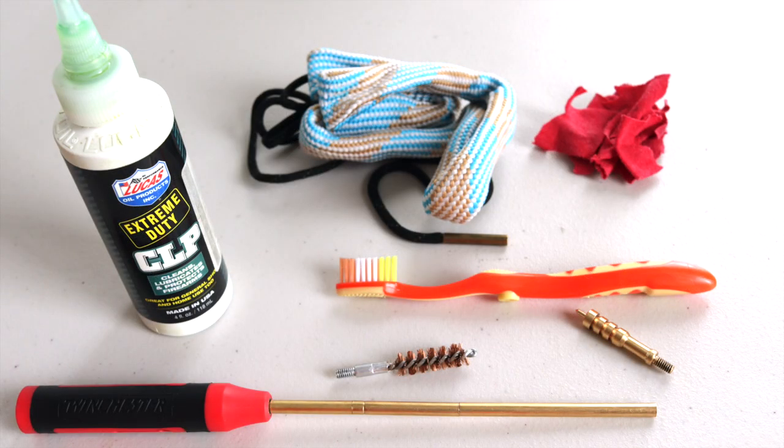To get started, you'll need a few things: CLP, a boar snake, cleaning patches or in this case a cut-up t-shirt, a nylon brush, a bronze bore brush, and a jag. I didn't put it in the picture, but you'll also need cotton swabs. You can get any of this stuff from your local sporting goods store or from Amazon. I'll put links to everything in the notes below.